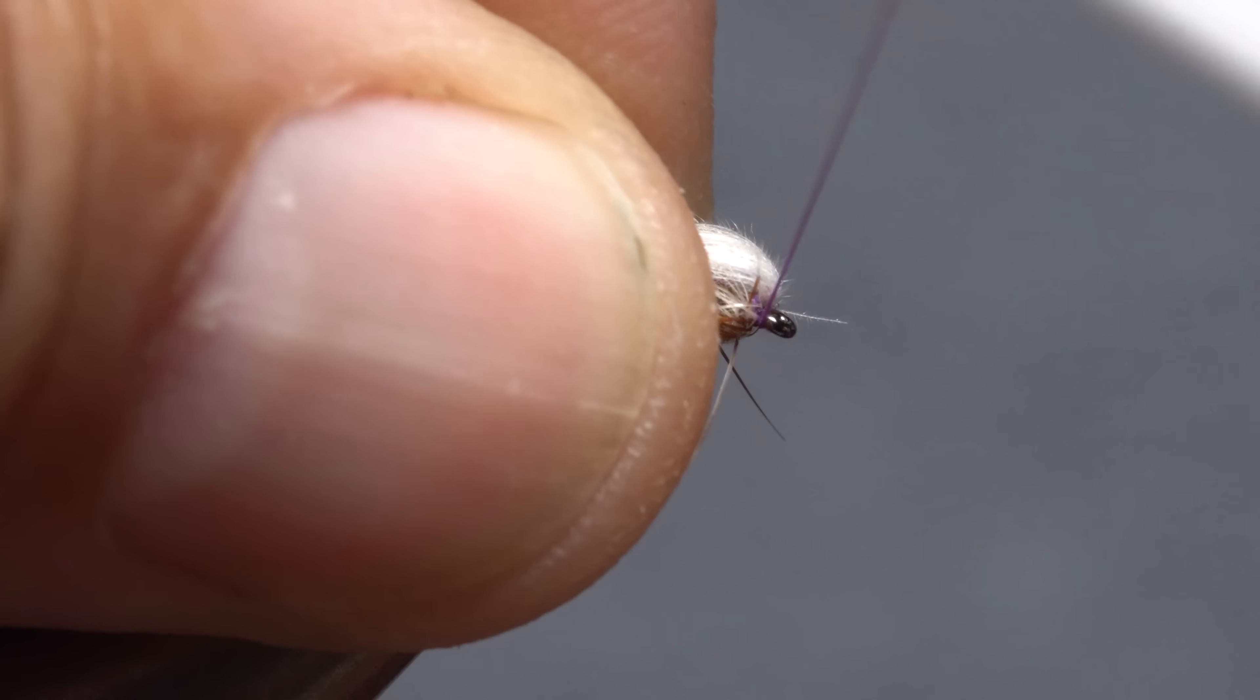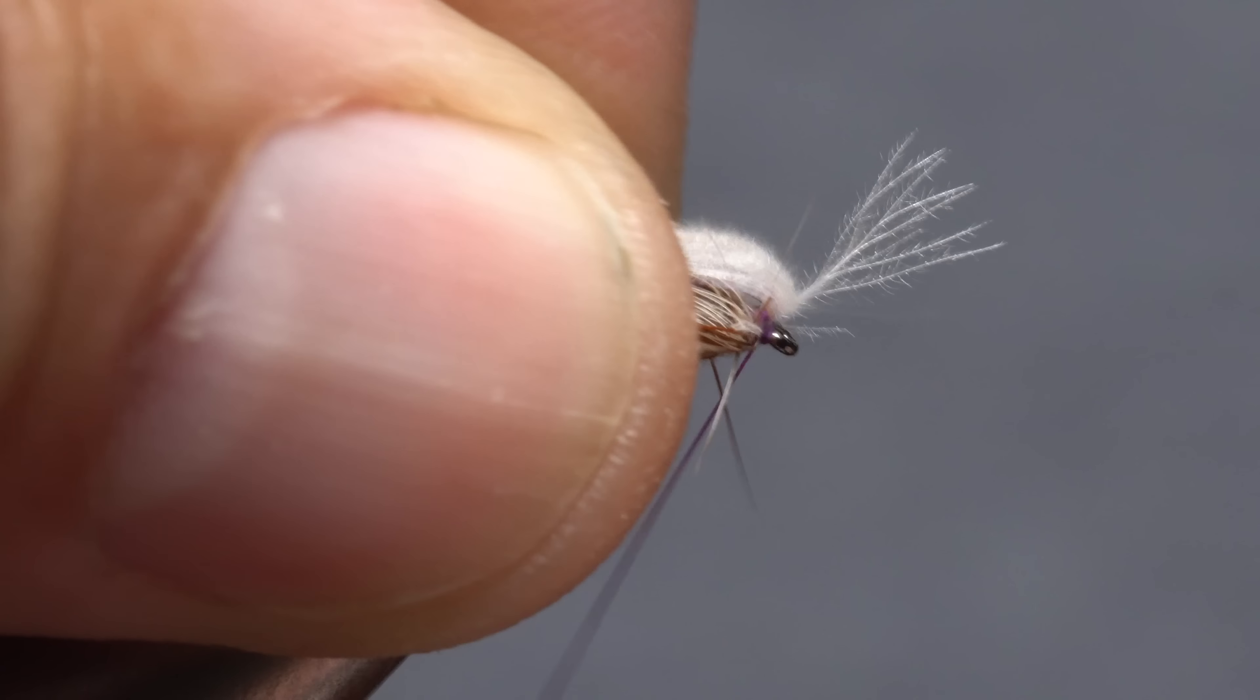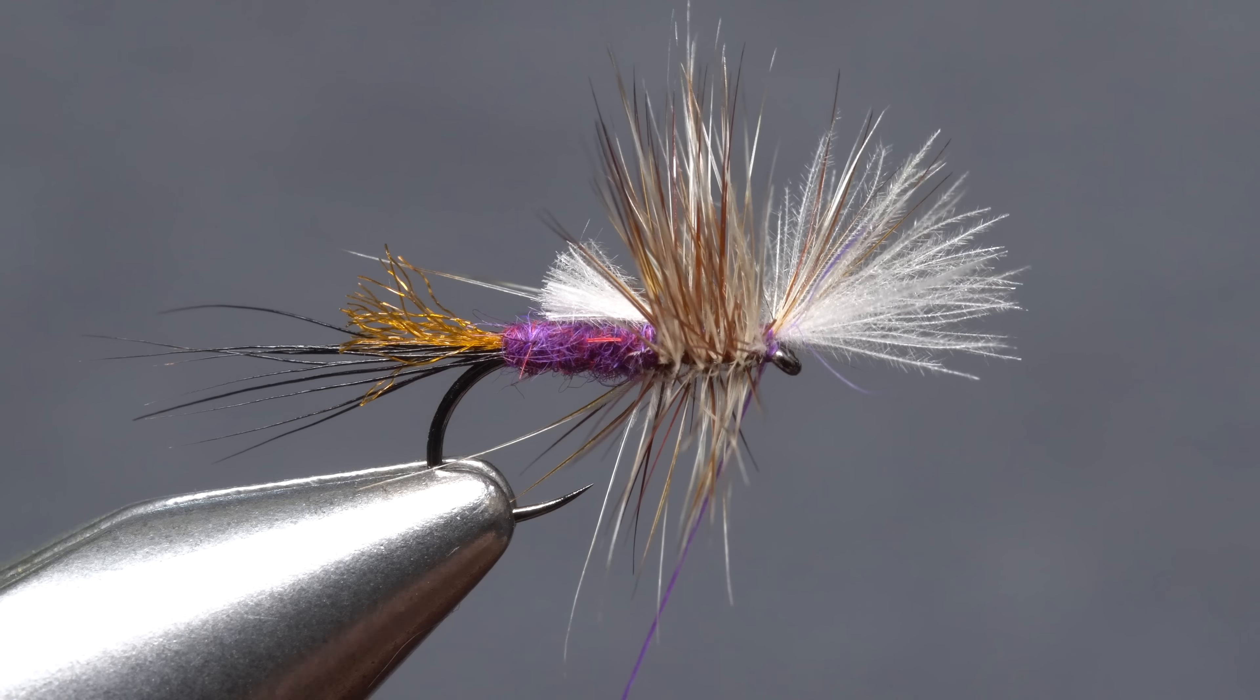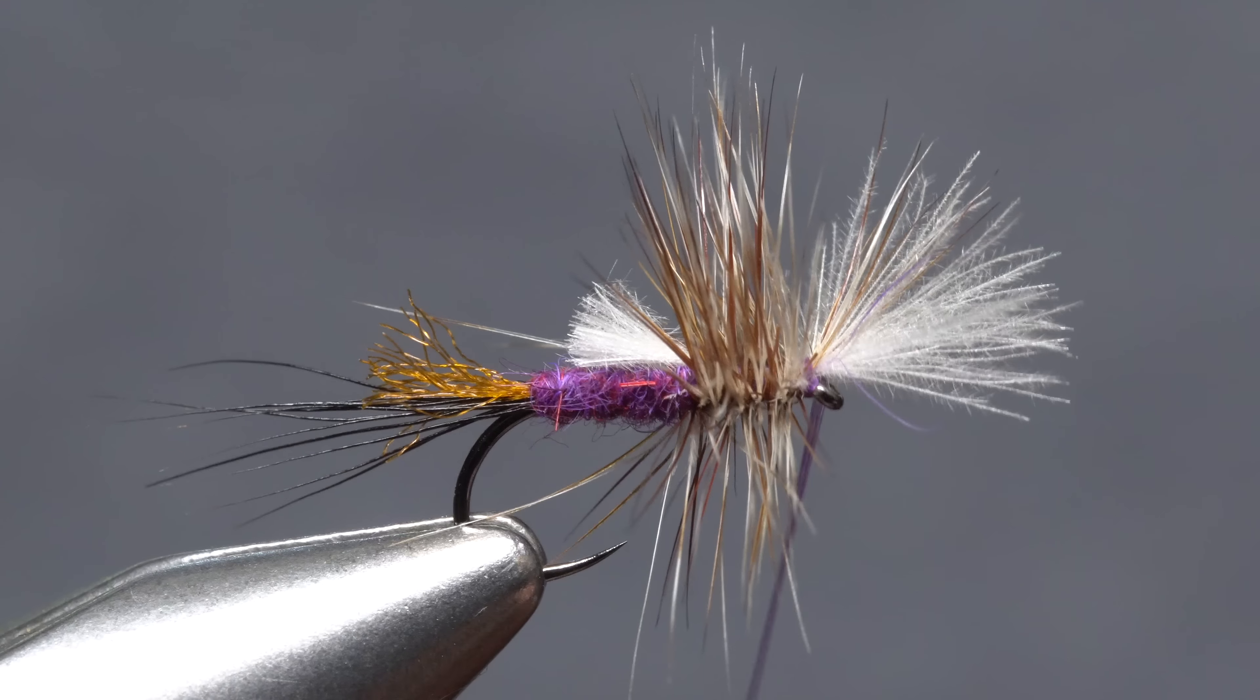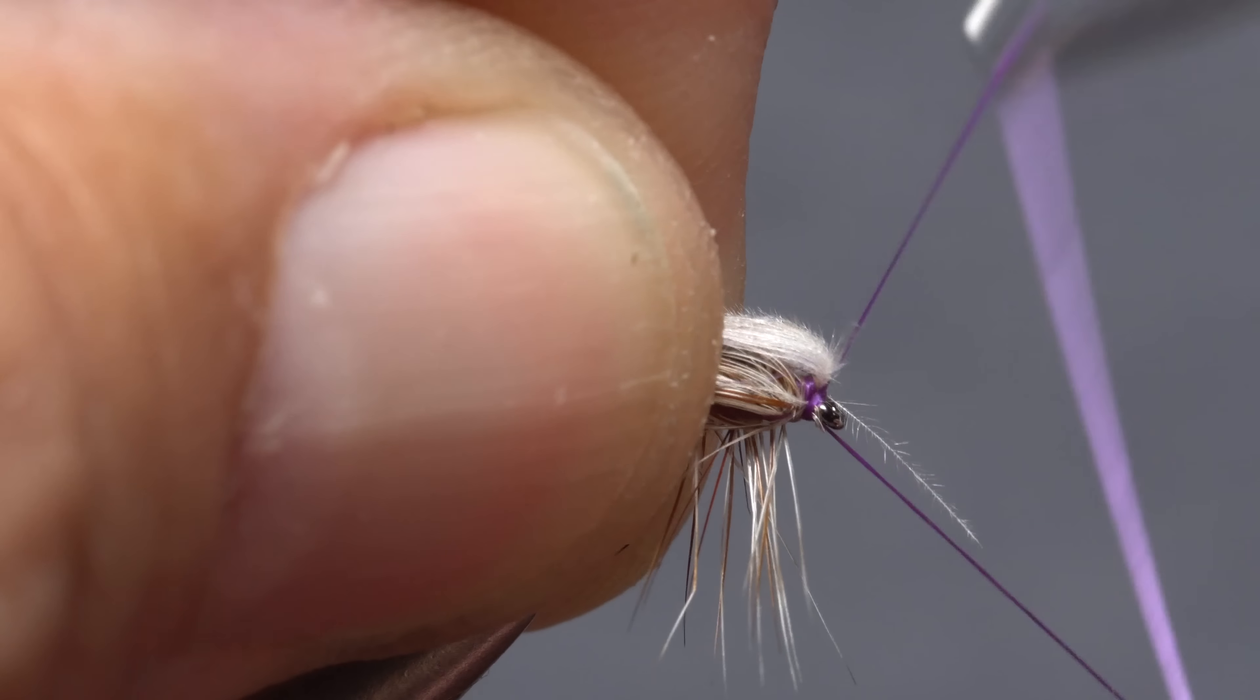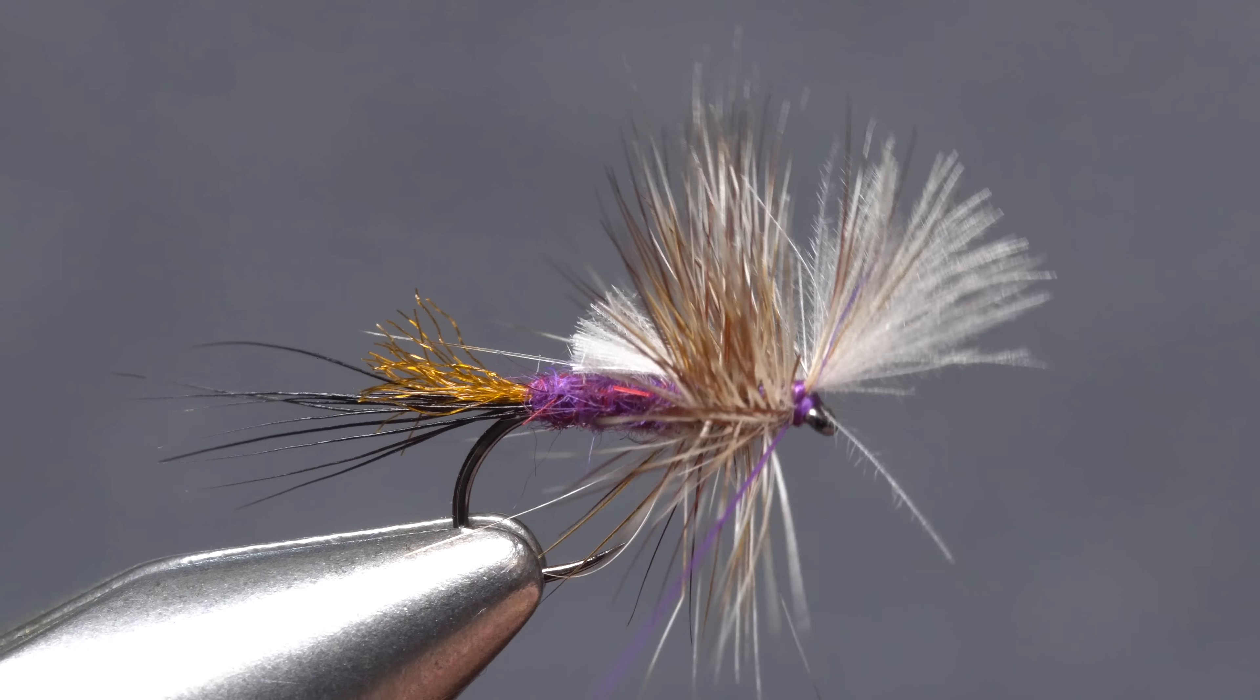Pull the wing up and back and take a few wraps around the shank at the back edge of the hook eye. This should prop the wing up just a little. Get hold of your whip finish tool and use it to do a three or four turn whip finish, seat the knot well and snip or cut your tying thread free.